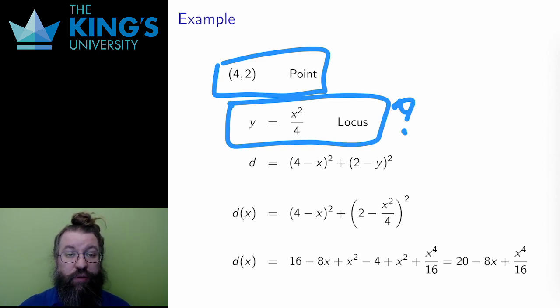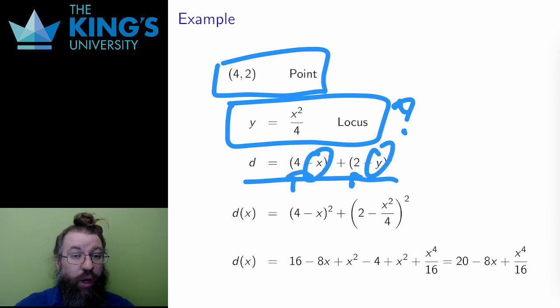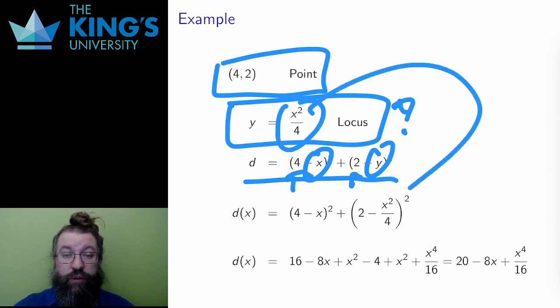This is the distance squared function with the points (4,2), and the unknowns x and y. And I'm going to replace y with x squared over 4, that's the equation of the locus.